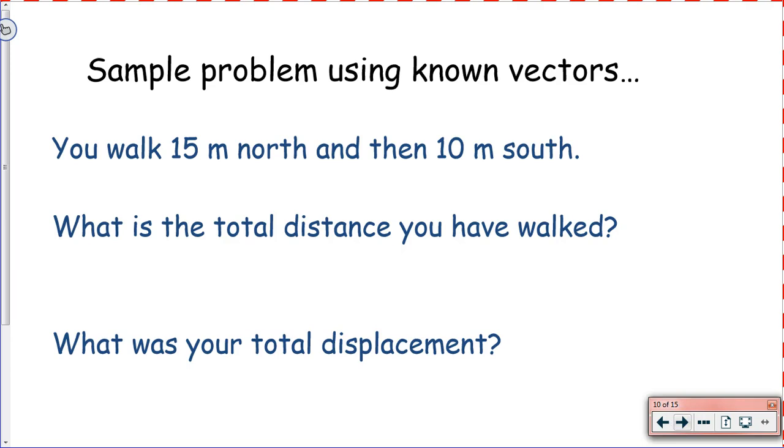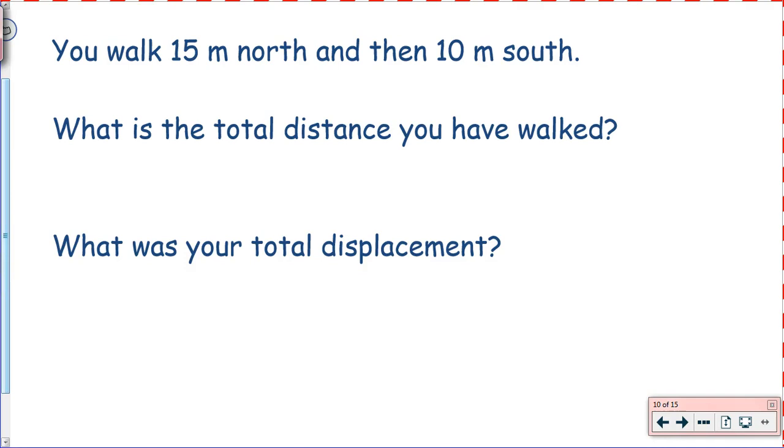Sample problem using known vectors. You walk 15 meters north and then 10 meters south. What is the total distance you have walked? Okay, so again, with total distance, all we're looking at here is the magnitude of the distances we travel. So we have distance 1 is 15 meters. Distance 2 is 10 meters. So we're going to look at the total change in distance. Change in distance is just D1 plus D2. And we're just simply adding our two numbers together. Direction really doesn't matter with distance. So we get an answer of 25 meters.